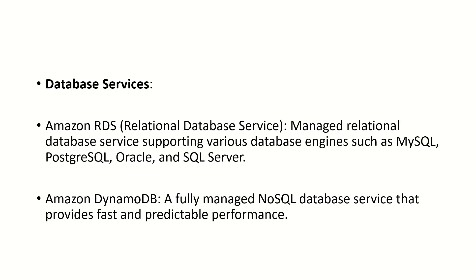Coming to the next slide, we have database services. Amazon provides mainly two kinds of database support: one for relational databases and another for non-relational databases. Amazon RDS is the Relational Database Service — a managed relational database service supporting various database engines such as MySQL, PostgreSQL, Oracle, and SQL Server. Amazon DynamoDB is a fully managed NoSQL database service that provides fast and predictable performance.